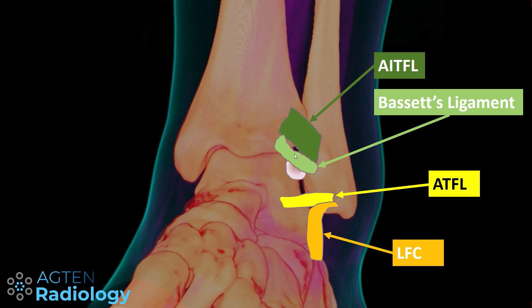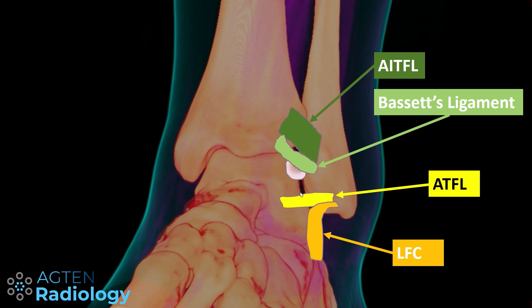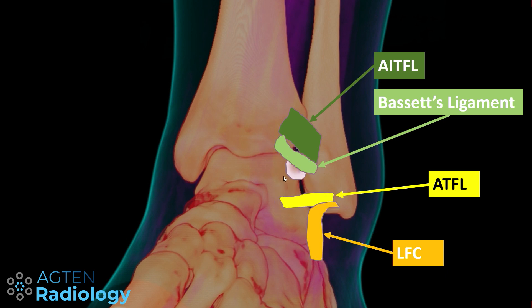On the other hand, you can also have a thick Bassett's ligament — maybe after trauma with some hypertrophy or synovitis — and then you can have the same symptoms. This is basically the space where we are looking for pathology in the anterolateral gutter.